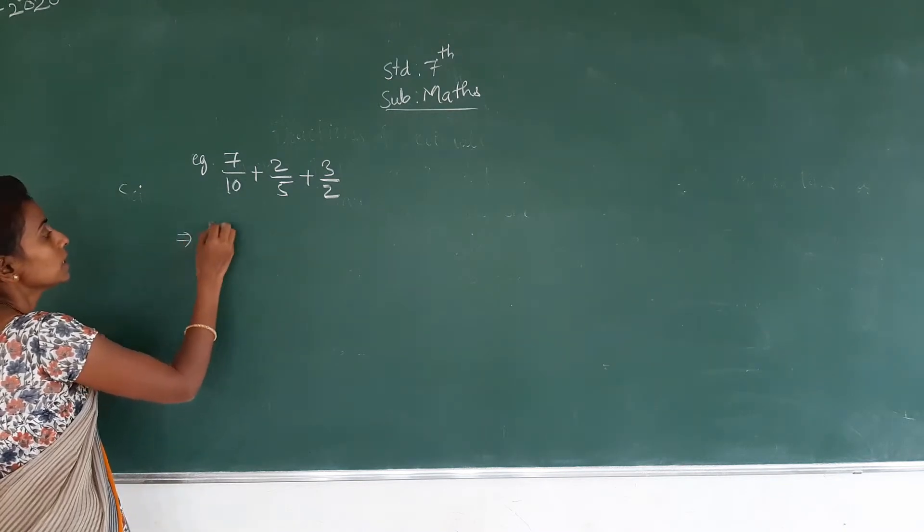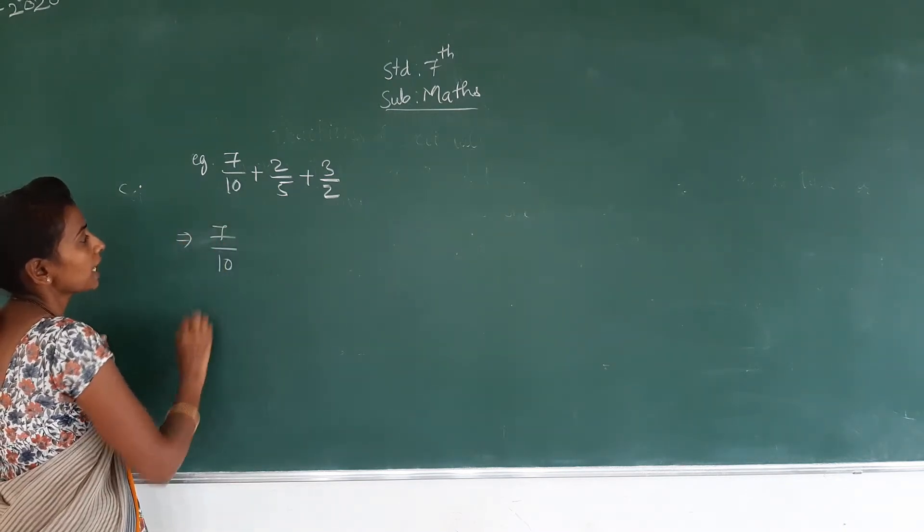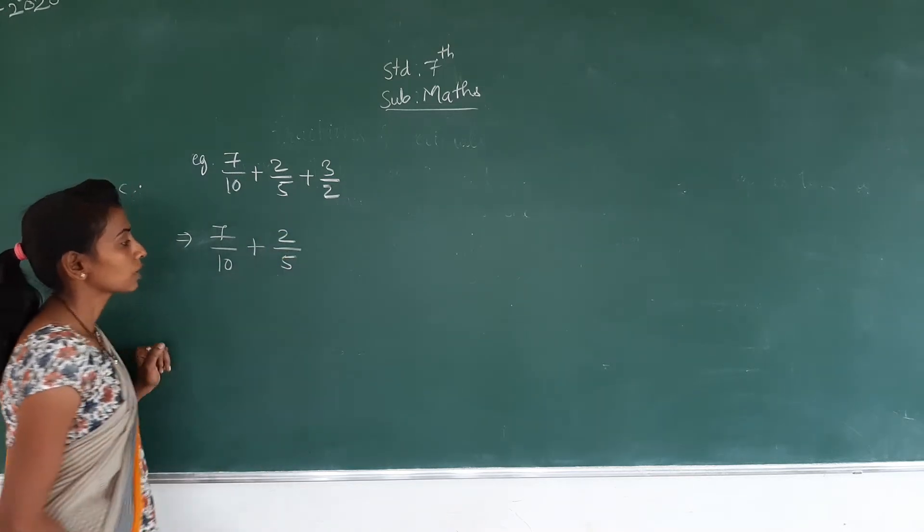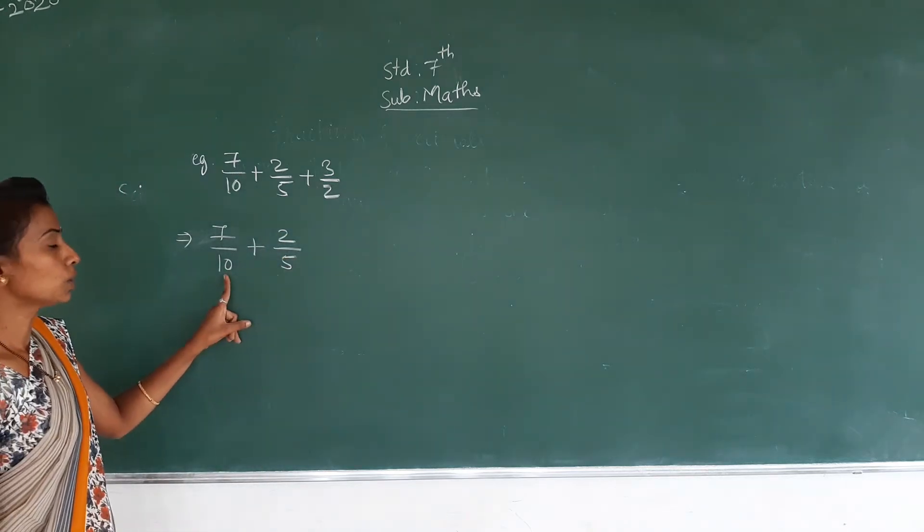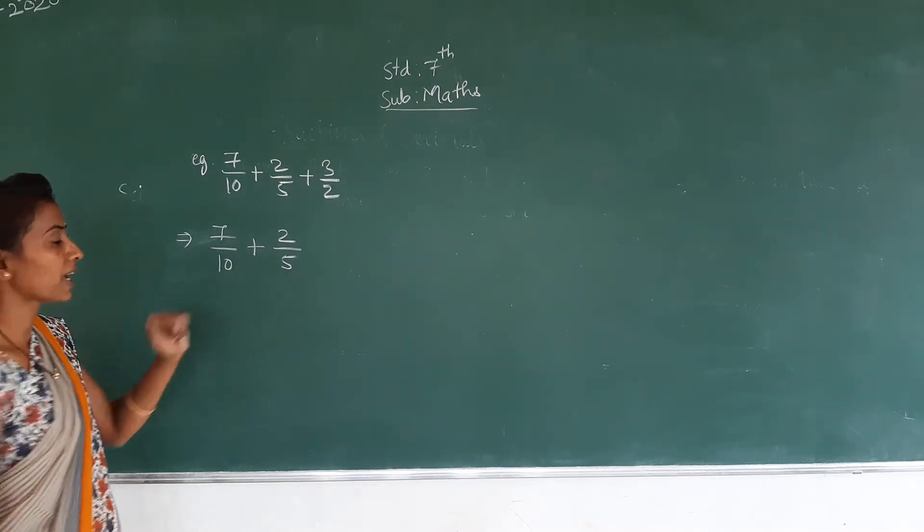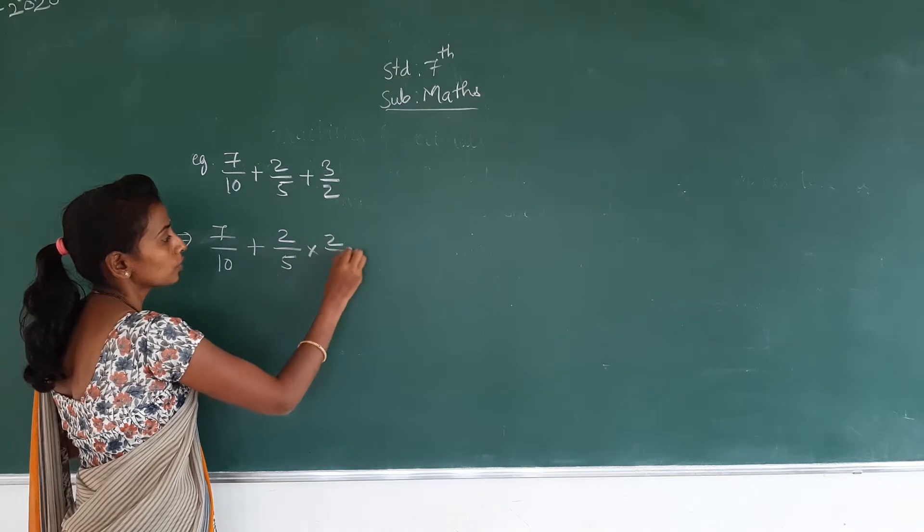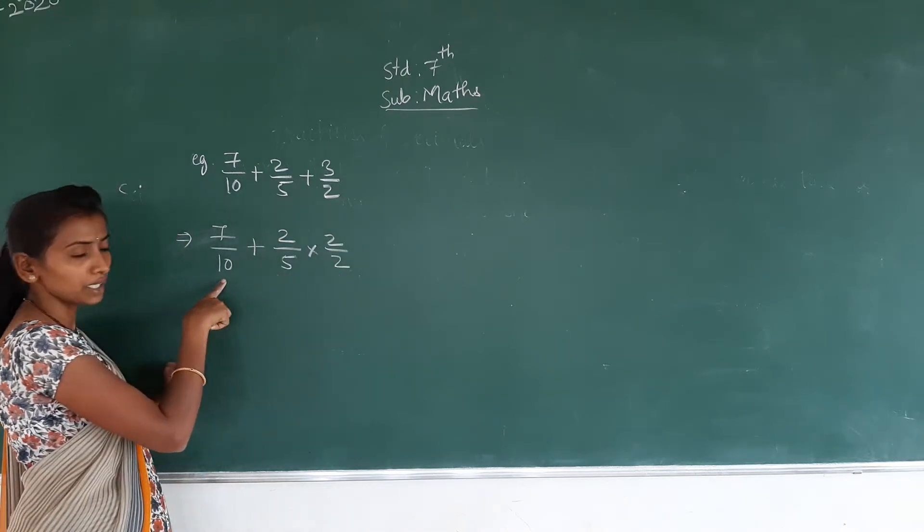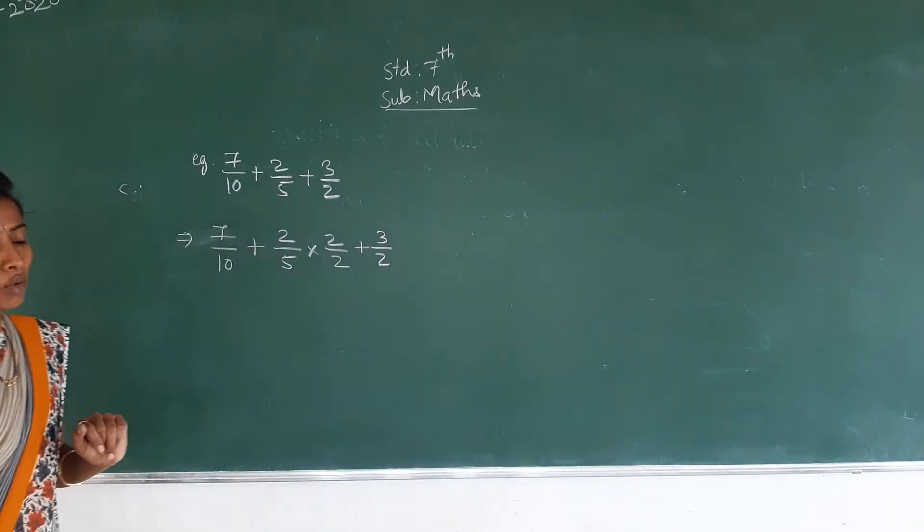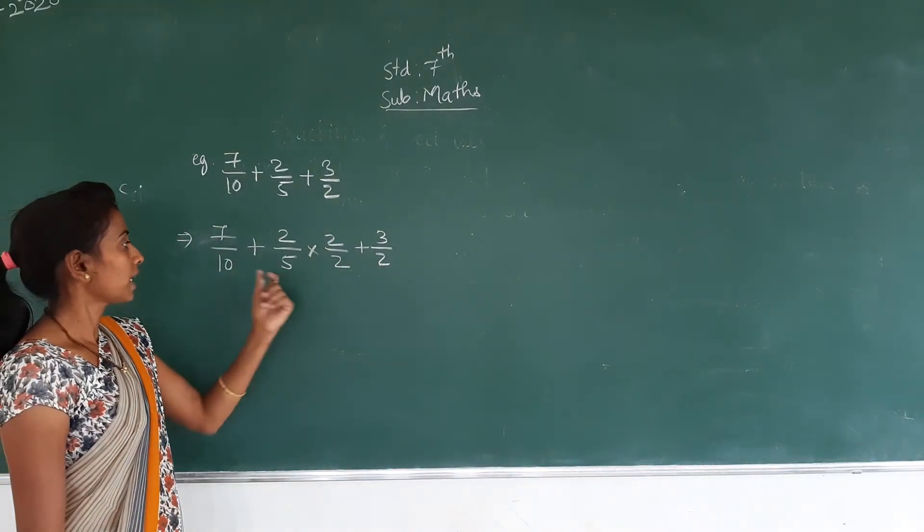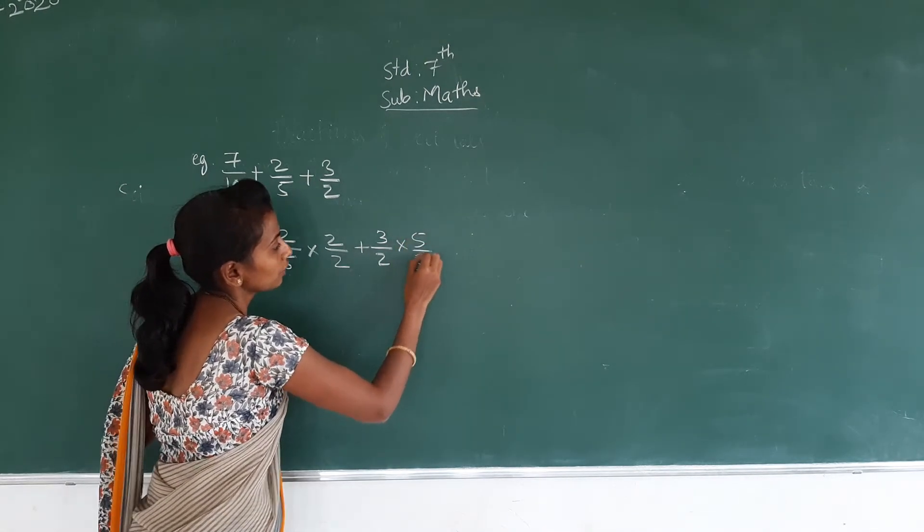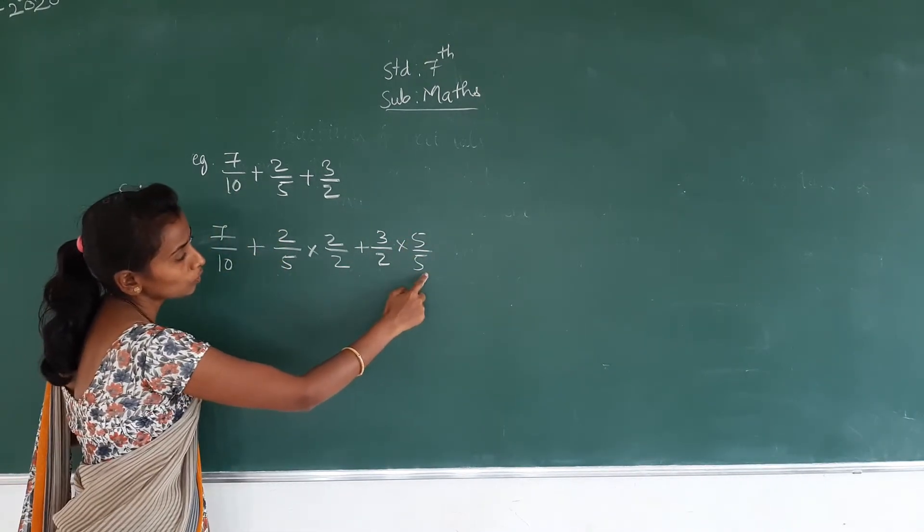For that, 7/10 I am keeping as it is, plus 2/5. We want to get 10 as the denominator. For that I am multiplying this fraction by 2/2. 5 is there and I am getting 10 here. Again, 3/2 here, denominator is 2. To get 10 as the denominator, I am multiplying by 5/5. That means 2 becomes 10.